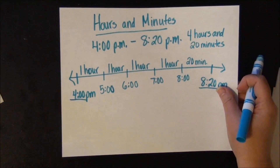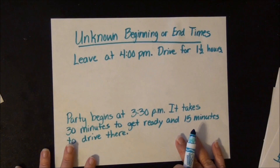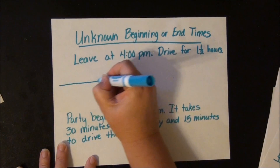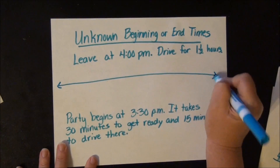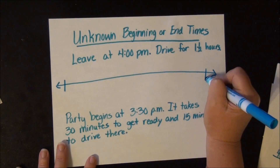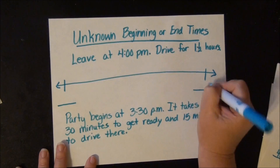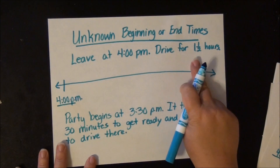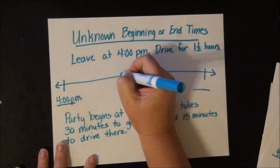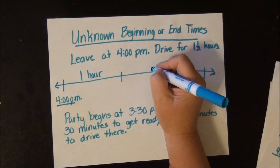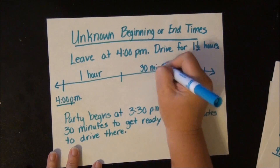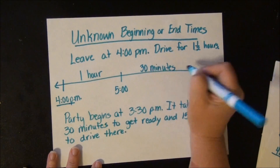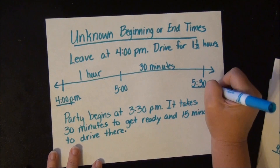Now let's say you have an unknown end time. You're leaving at 4 o'clock p.m. and you're going to drive for 1 and a half hours — you want to know what time you will get there. Draw the open number line with a mark for beginning and end time, even if you don't know the end time. We know the beginning is 4 o'clock p.m. and we know it took 1 and a half hours, so I'm going to mark 1 hour and then a half hour is 30 minutes. So 4 o'clock, the next hour is 5 o'clock, and 30 more minutes would be 5:30 p.m. — you will arrive at 5:30 p.m.